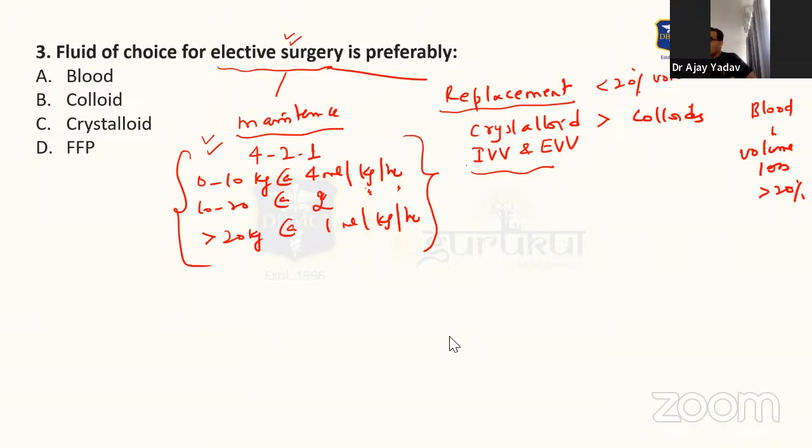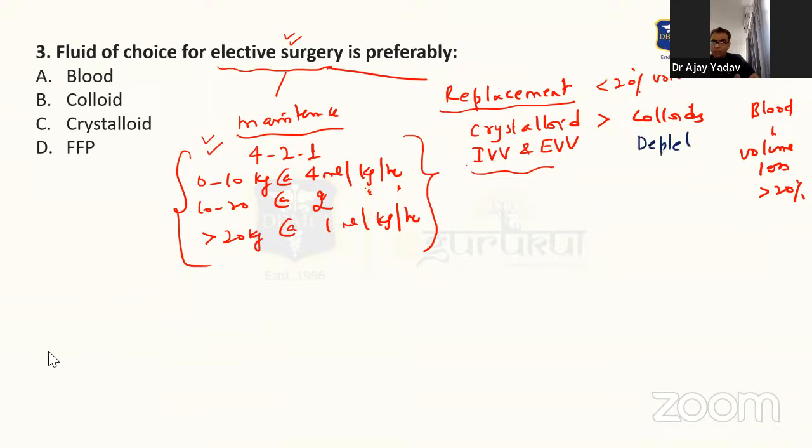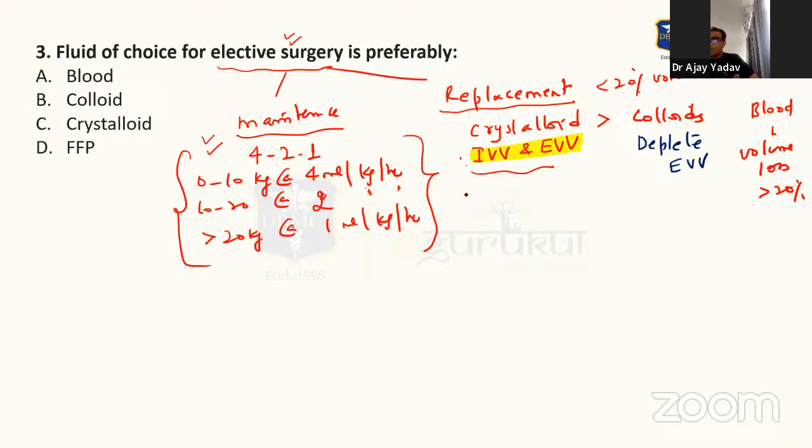While colloids can further deplete extravascular volume. So that is the main advantage of preferring crystalloids that they maintain intravascular as well as extravascular volume. And that is why you know that crystalloids, they are given in a ratio of 2 is to 1 means they are being given as twice. It means that there is 500 ml blood loss, you have to replace it with one liter because half of the volume is going to enter the extravascular space.